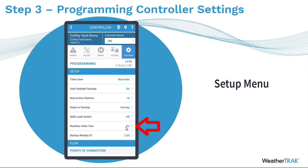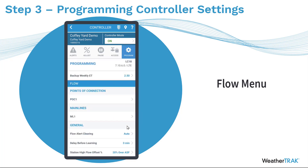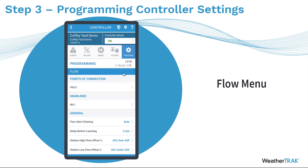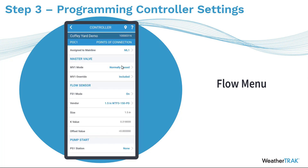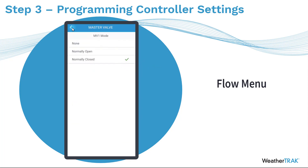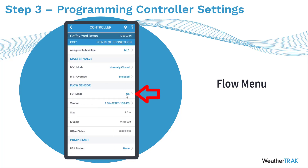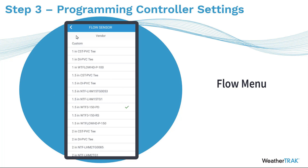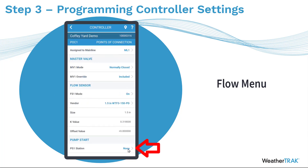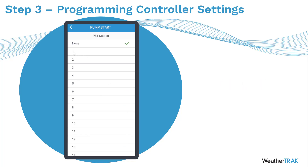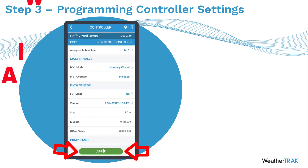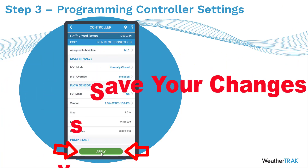Runtime valve tests should always be on, and all of your settings from the setup menu should match the conditions in the field. Scroll down to see the flow settings — this is what you'll program if you're adding a flow sensor during installation. Go to Point of Connection 1 and select it to see all components. If you have a master valve, choose either normally open or normally closed. Turn on the flow sensor and select what type of flow sensor you have. If you have a pump, select which station controls the pump start relay. Notice that when you make a change, the Apply button illuminates — make sure to apply any changes you make through the programming process.